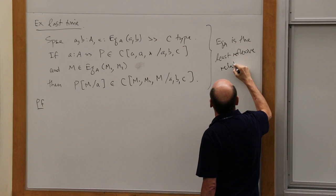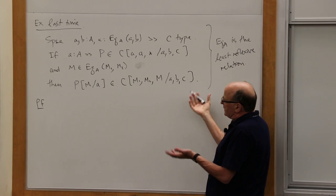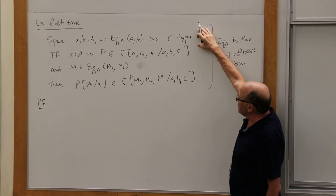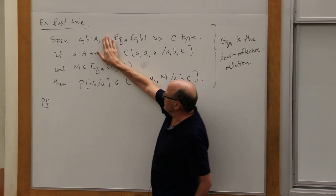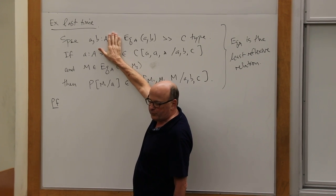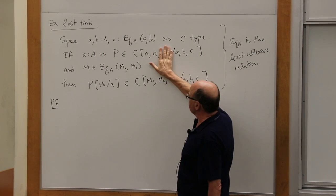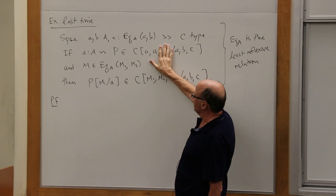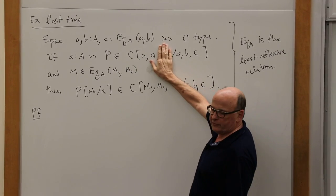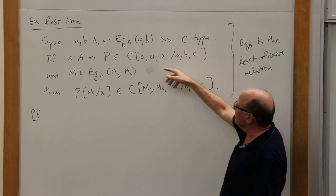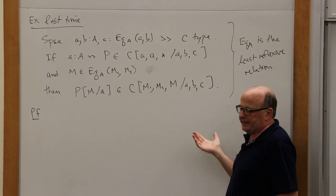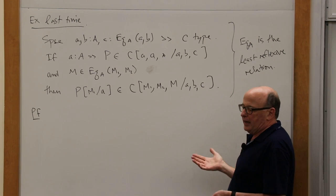One way to say that is through a characteristic pattern — this kind of universal property. If it's the first time you've seen this kind of thing, you could just suppress the C for a moment, and then it's just a matter of providing the evidence for reflexivity. We're basically saying C is a reflexive relation, ignoring the third part.